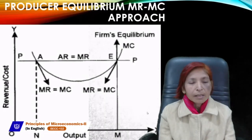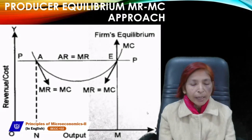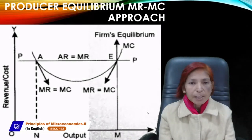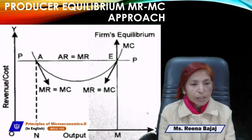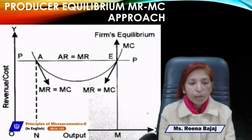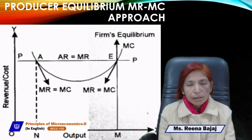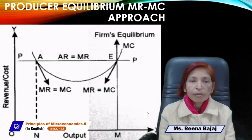Next is the second approach diagram — MR=MC approach. Where MC cuts MR from below and MC equals MR, the firm is in equilibrium and earns maximum profit. The price line is the horizontal demand curve (AR=MR), which is perfectly elastic. The MC curve is always U-shaped — it falls initially, reaches a minimum, then rises — because cost is inversely related to production initially.